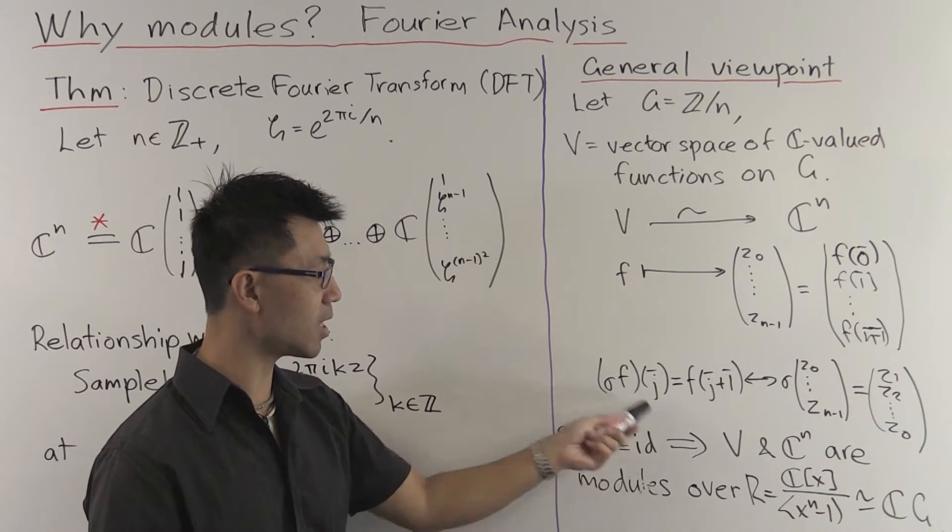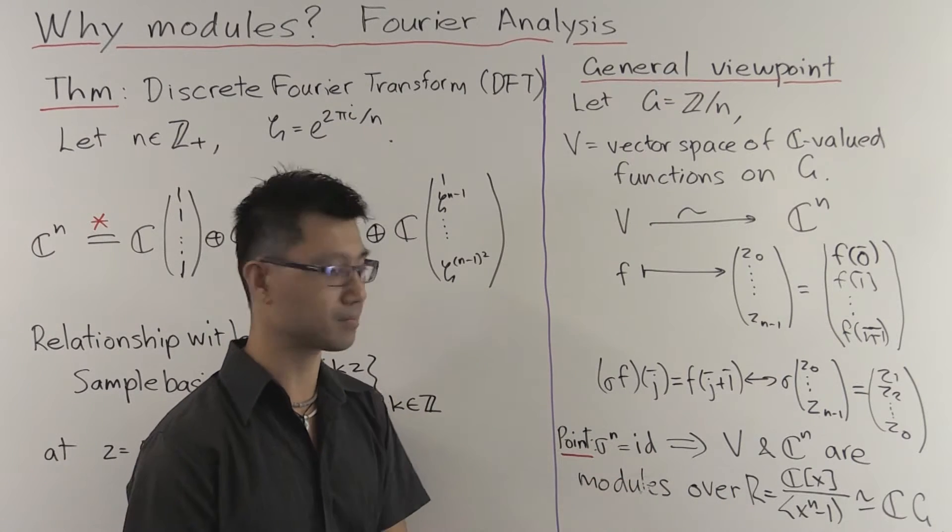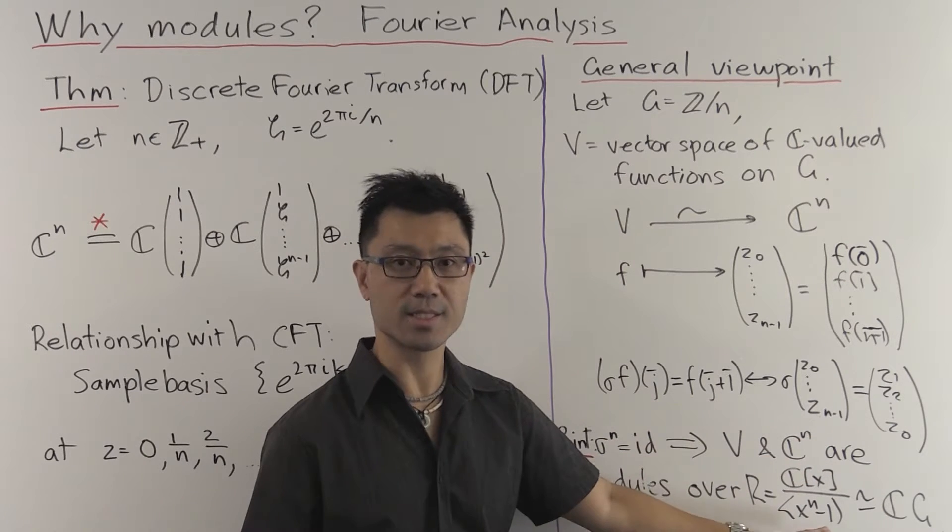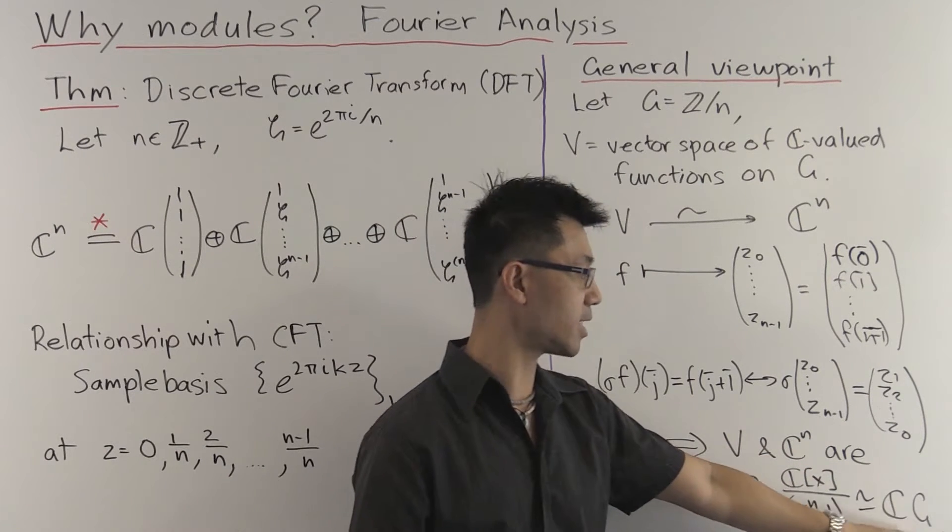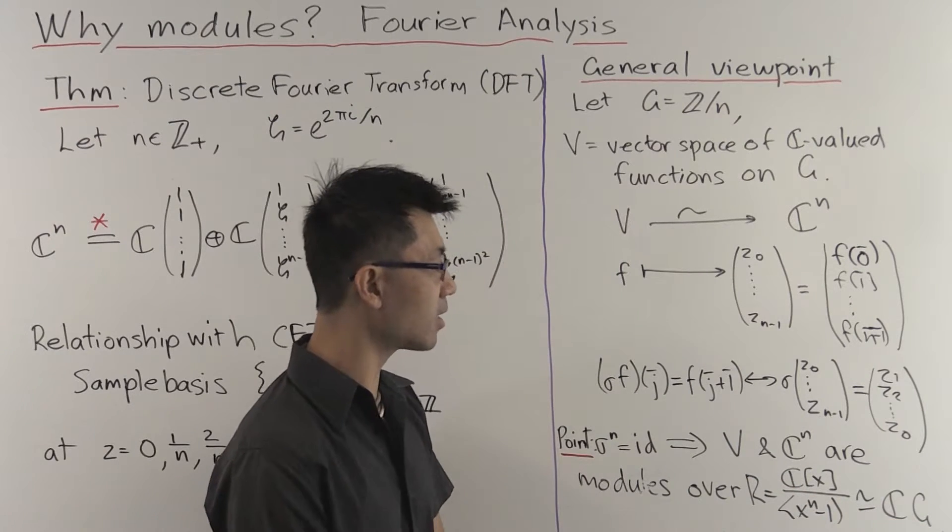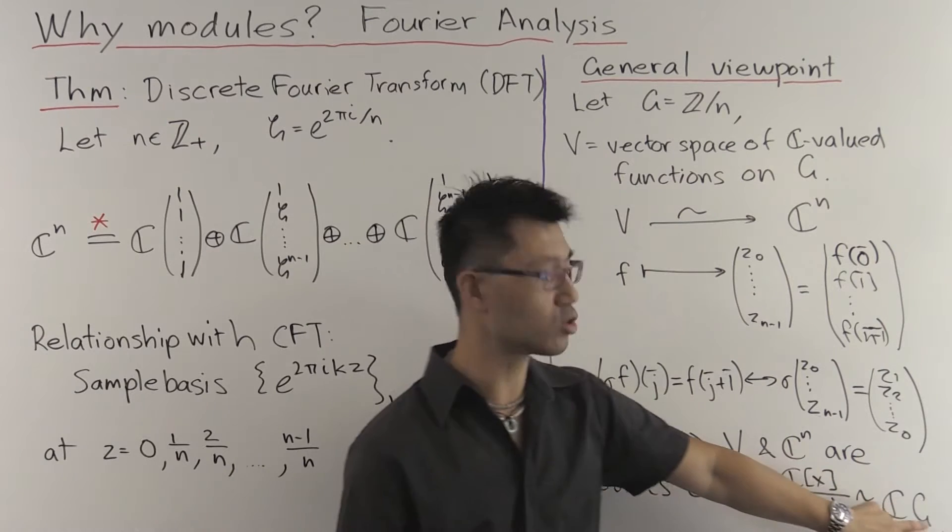Another way of writing this ring here is it's actually the group algebra CG, if you've learnt about the group algebra. And this captures the fact that the symmetry, the module structure that we have here, is due to this group.